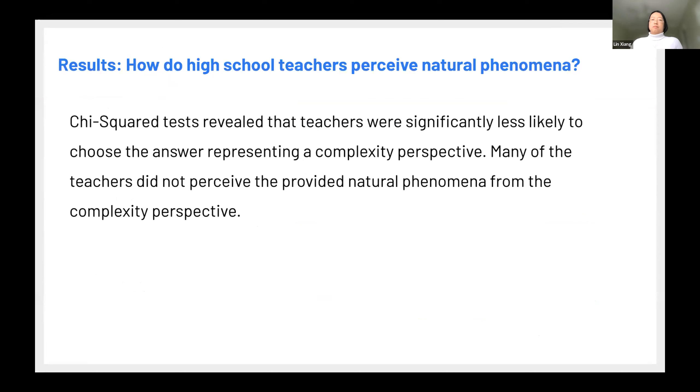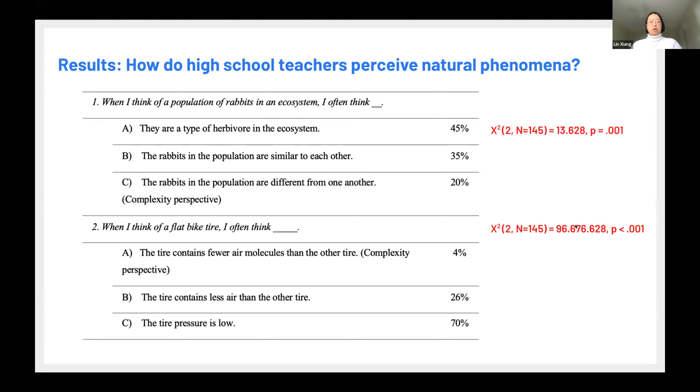So the results. Teachers' responses show that many of them did not perceive the provided natural phenomena from a complexity perspective. So here are examples for you. We asked teachers, when you think of a population of rabbits in the ecosystem, you tend to think. So you can see 80% of teachers, they choose the non-complexity perspective. And then when we asked them if you think about the fact higher, then here even more, like 96% of teachers, they think from a non-complexity perspective. Now, sometimes we may argue do we have to, but that's not our question. We just only want to see to what extent teachers perceived natural phenomena in the complexity way.